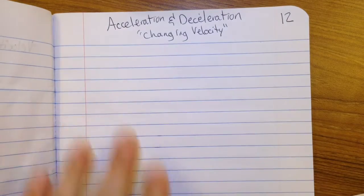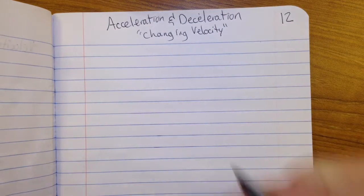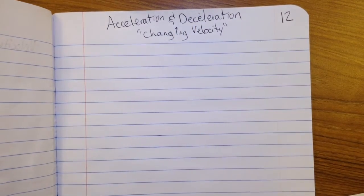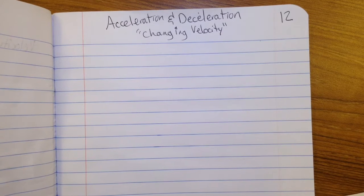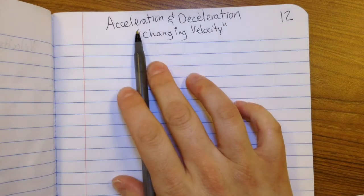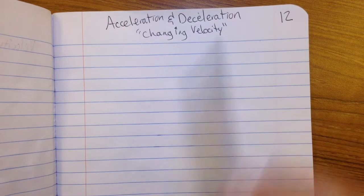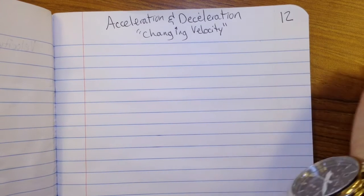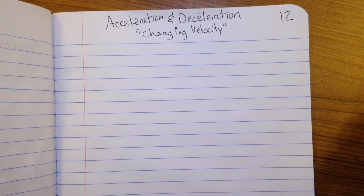We're talking about a situation where the velocity is changing, and we want to know how fast or how slowly that velocity is changing. It's either increasing, which would be acceleration, or the velocity is decreasing, which would be deceleration. Two very similar concepts — actually almost exactly the same thing, just kind of the opposites.